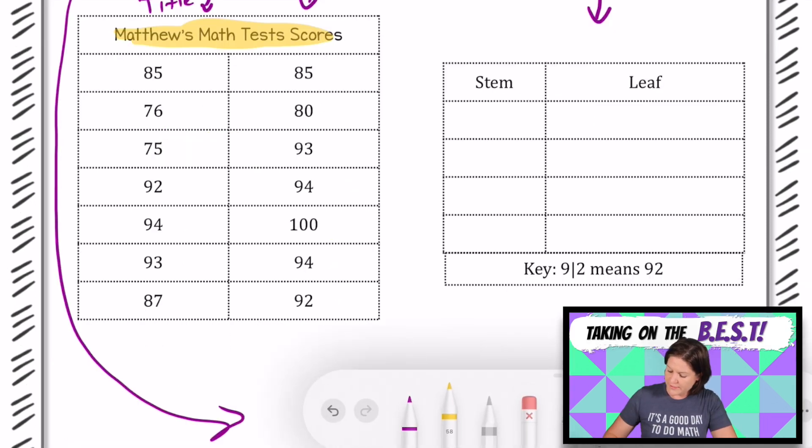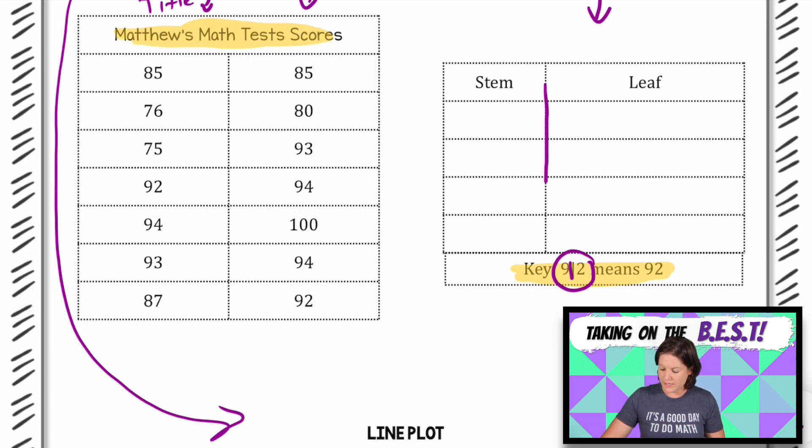First things first, I want you to pay attention down here to the key. This says that 9 with like a little slash sign of 2, this slash represents the break right here. 9 slash 2 equals 92. We're going to put the stem of our number, in this case it'll be the tens place, and then the leaf is going to be our ones place.